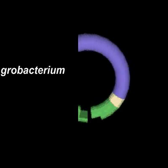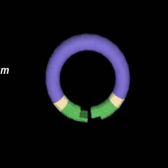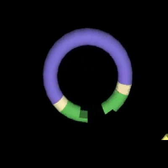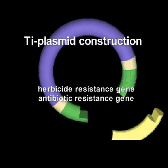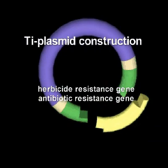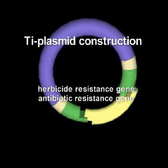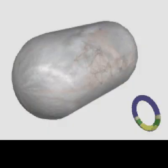This video is an illustration of the mechanism of agrobacterium using the genes for herbicide and antibiotic resistance. The genes are first inserted into the Ti plasmid between the left and right borders.